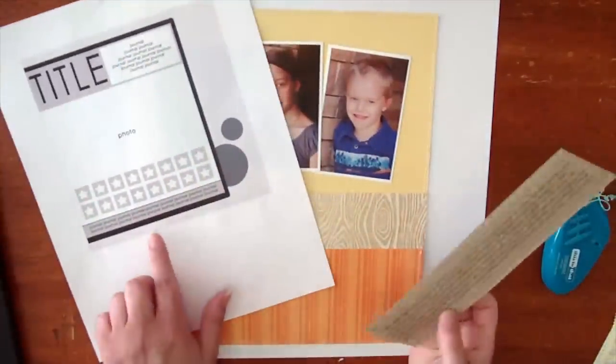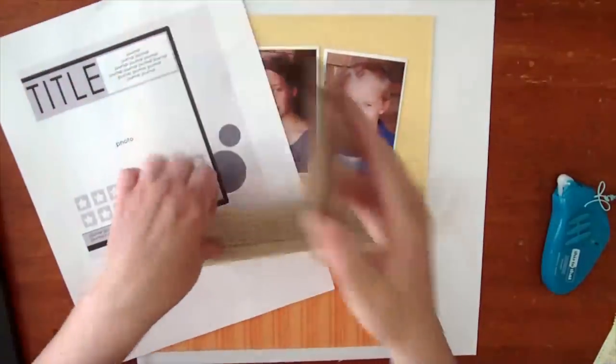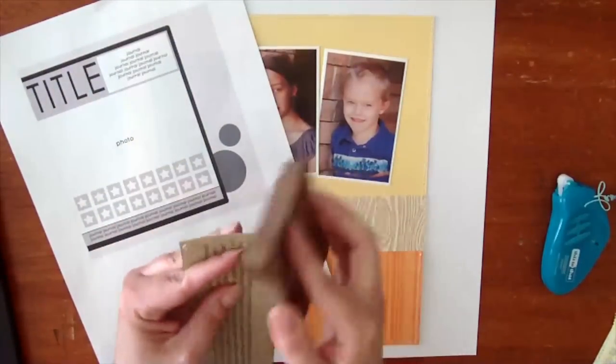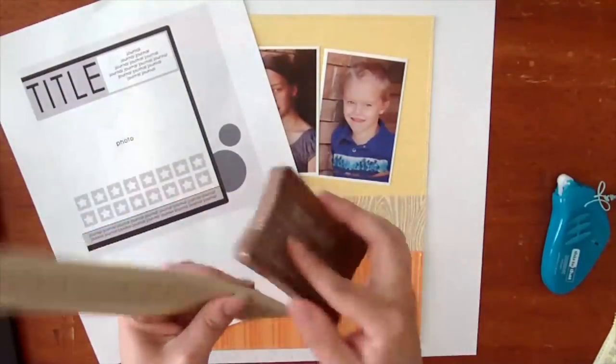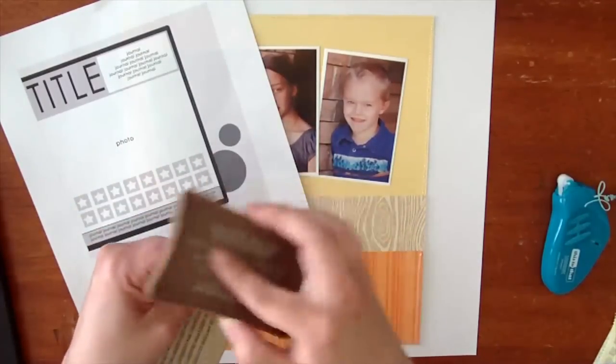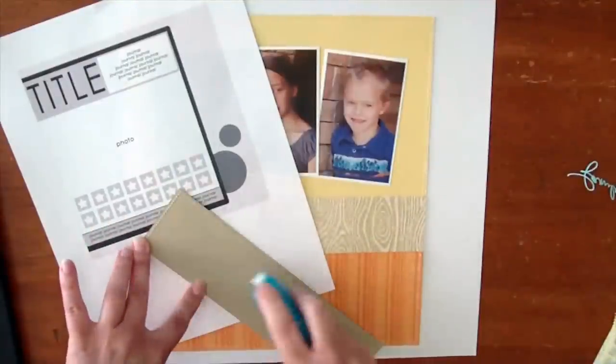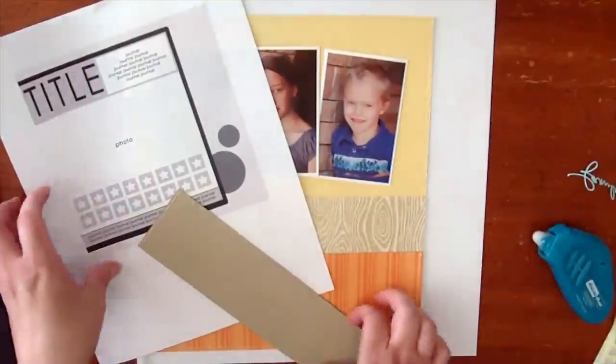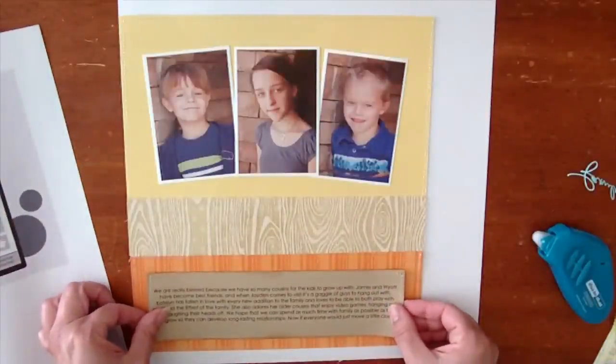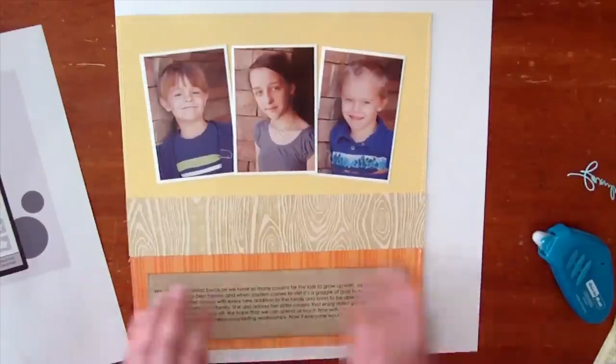Now we're going to add the journaling. I pre-printed the journaling on craft cardstock and I'm just going to ink the edges with some brown stamping ink. Here's a little tip. When I got this brown stamping ink, it was a little bit too dark, and so I left the lid off for about an hour, which kind of dried up the ink pad but toned down the color a little bit. That's one of my tips for getting the exact ink color that you want.